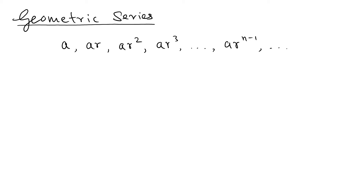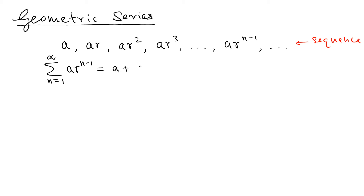When you add the terms of the geometric sequence, you get what we call the geometric series. So the series is the sigma notation: the sum from n=1 to infinity of a·r^(n-1). When you plug in n=1 you get a·r⁰, which is just a, and when you plug in n=2 you get a·r, and so on. That is the representation of the geometric series.